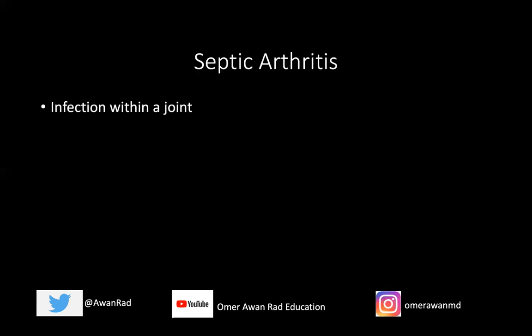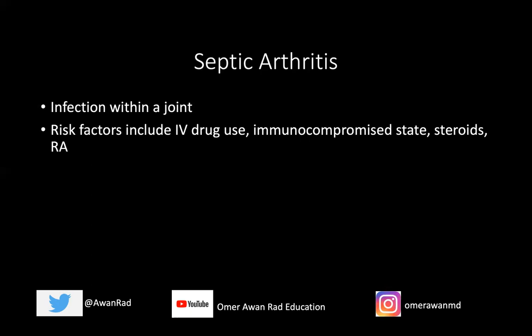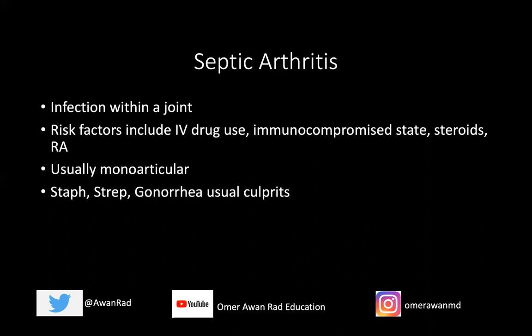Let's talk about septic arthritis — infection within a joint — a very important topic for the USMLE. Key risk factors include IV drug use, immunocompromised patients, patients on steroids, and even rheumatoid arthritis itself, because chronic inflammation and joint destruction can lead to further destruction. Septic arthritis is usually monoarticular — only one joint is typically involved, in contrast to most other arthritides where multiple joints are affected. The usual causative organisms are Staph aureus, Streptococcus pneumoniae, and Neisseria gonorrhoeae.